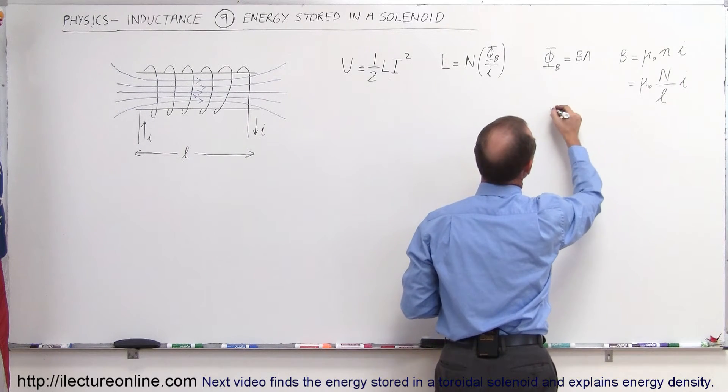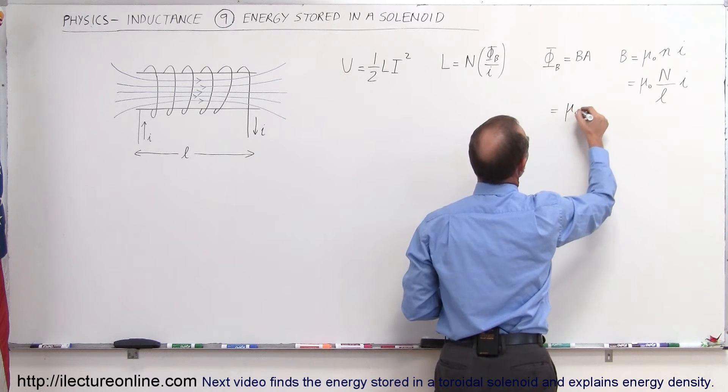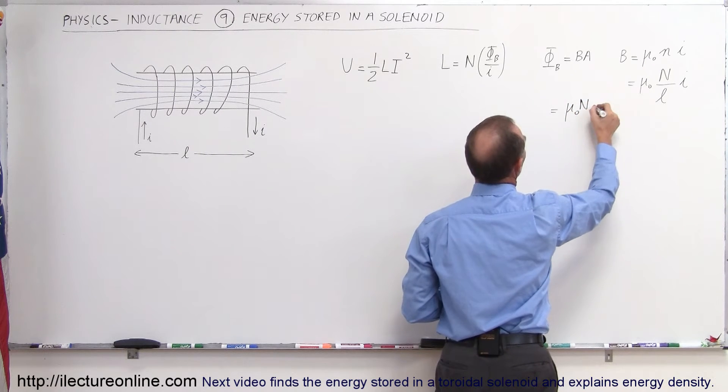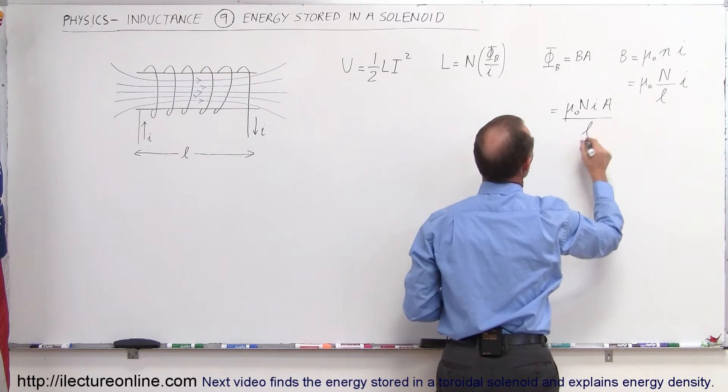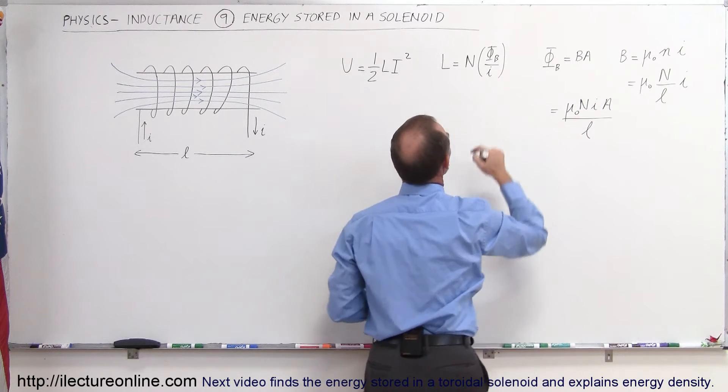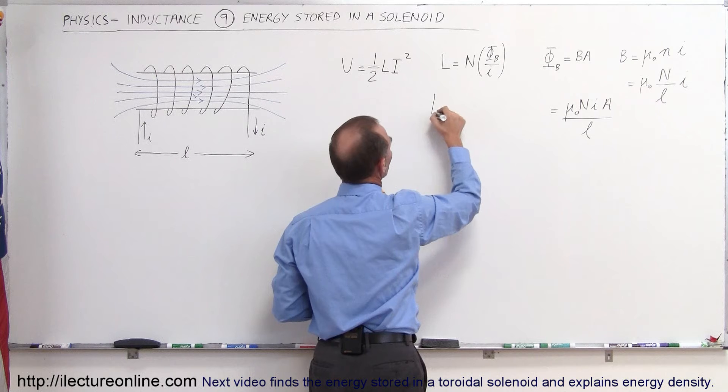Which then goes in here, so the self-inductance is equal to the number of loops times the flux, which is mu sub-naught N times I times A divided by L. And of course we still have the I down here like that.